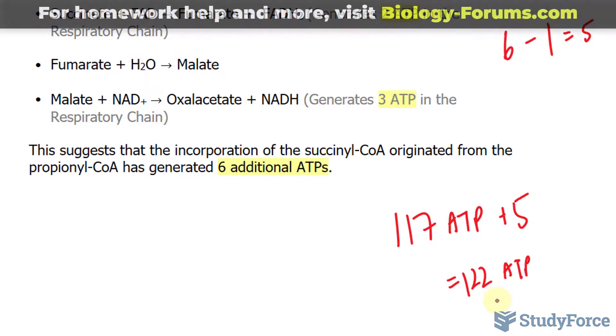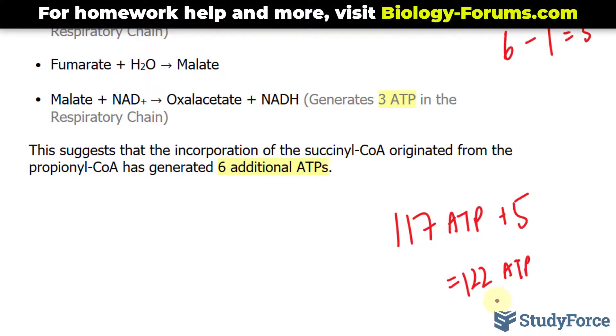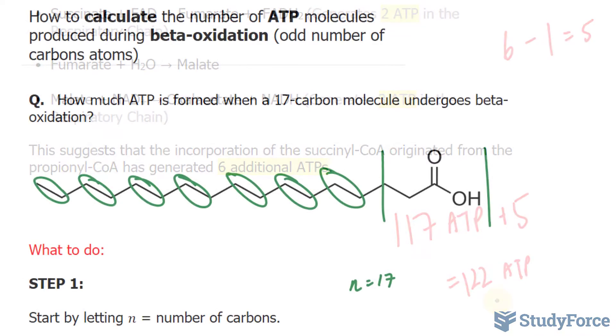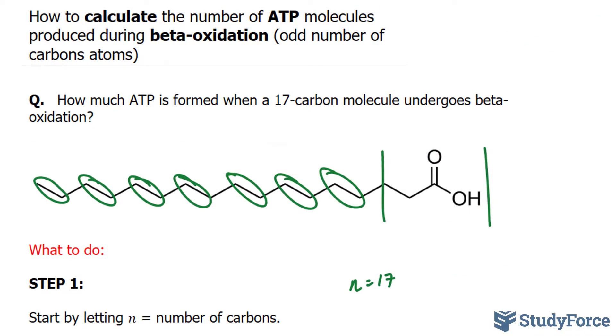Now the reason why you don't see calculations of odd number carbon fatty acid calculations online is because most fatty acids are even number chains. So there's a lack of literature pertaining to this topic. And that is how to calculate the number of ATP molecules produced during beta-oxidation.